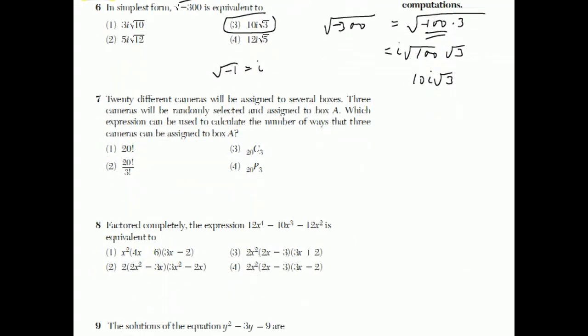Number 7. 20 different cameras will be assigned to several boxes. 3 cameras will be randomly selected and assigned to box A. Which expression can be used to calculate the number of ways? Well, this gets to the heart of what's the difference between a combination and a permutation.